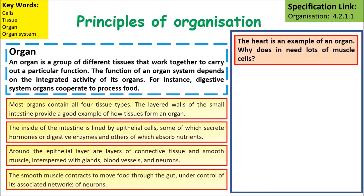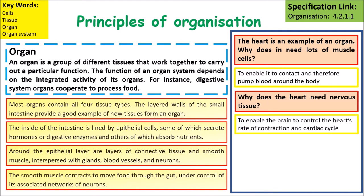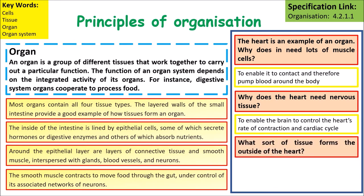The heart is another good example of an organ. It needs a large number of muscle cells because it is constantly contracting and relaxing to pump blood around the body. It needs nervous tissue to enable the brain to control the rate of contraction of the heart and to ensure the cardiac cycle is maintained. The outer layer of the heart is formed by epithelial tissue.